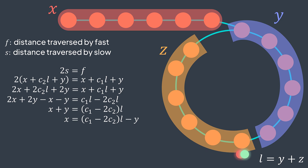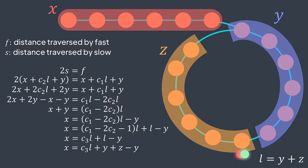We can rewrite (c1 − 2c2)·l as (c1 − 2c2 − 1)·l + l, and replace the constant (c1 − 2c2 − 1) with c3. Now we have x = c3·l + l − y. Since l = y + z, replacing the second l gives x = c3·l + y + z − y, which simplifies to x = c3·l + z. The distance before the cycle equals a constant number of full loops (possibly zero) plus the distance after the meeting point z.